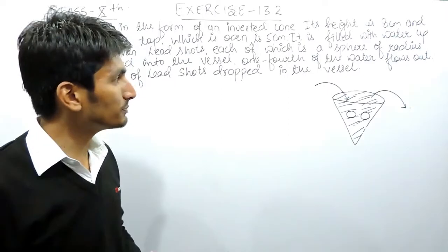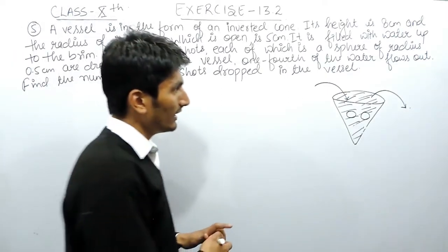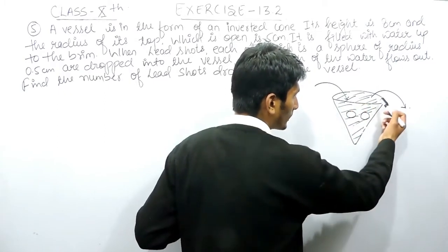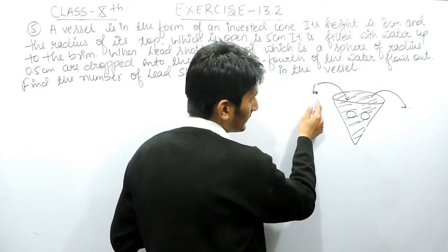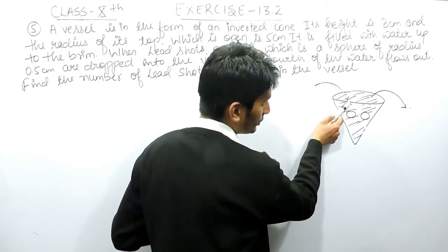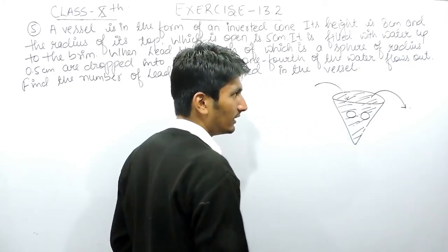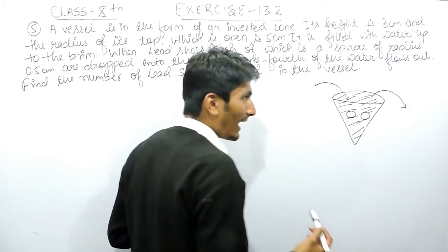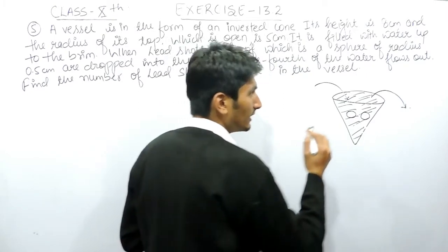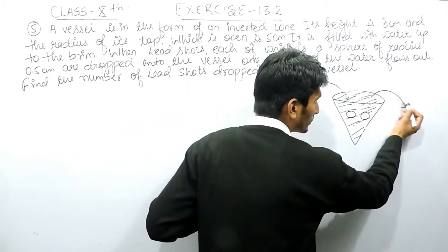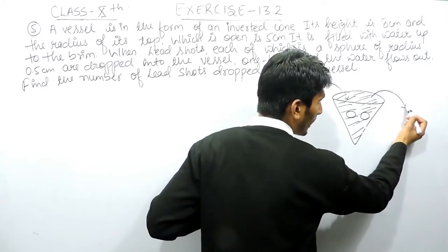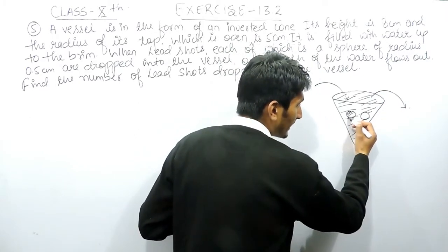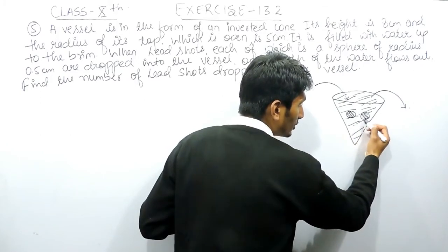Now, what does Archimedes' principle say? If a container is completely filled with water and I place something into this vessel, some water flows out. Archimedes' principle says the volume of water flowed out will be equal to the volume of the objects which have been dropped in.